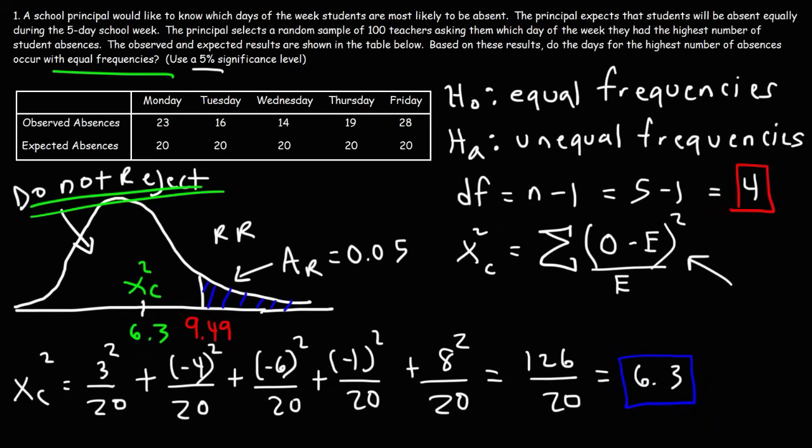And so that's how you could use the chi-squared test. So now you know how to calculate the chi-squared value and compare it to your critical value in order to determine whether you should reject or not reject the null hypothesis.